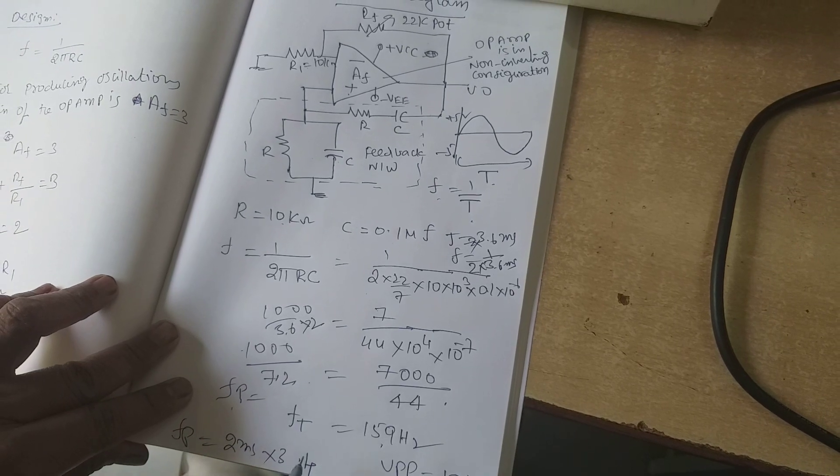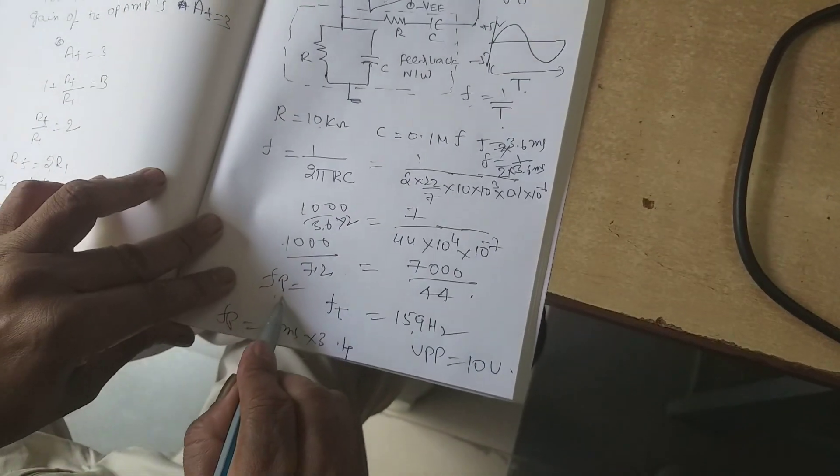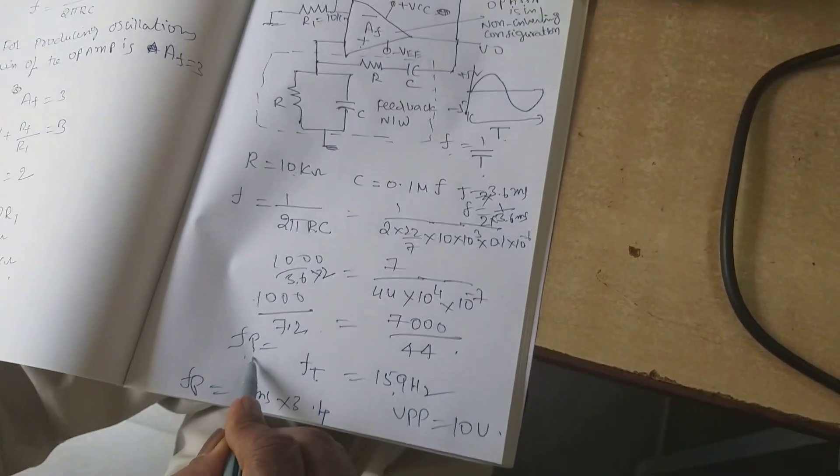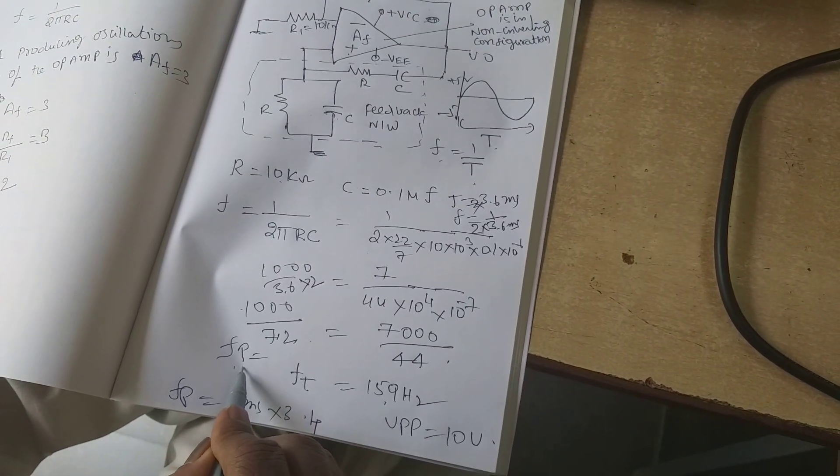Therefore, F theoretically equals F practical value. This is the experiment of Wien bridge oscillator using op-amp.